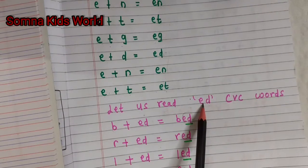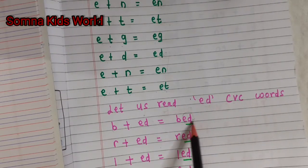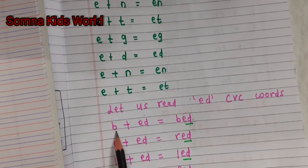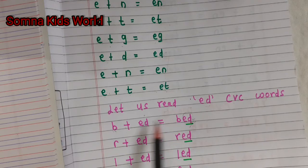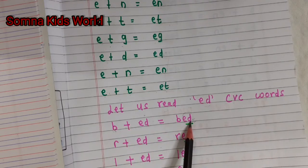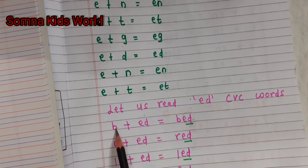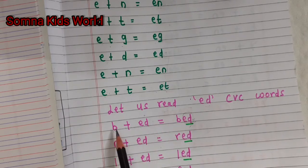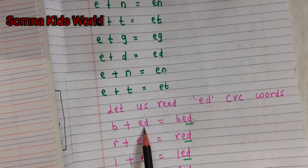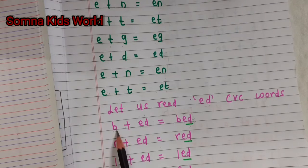Now let us see how to read the CVC words, or the three-letter words. You should know how to read these two-letter words first. The kids should read like this: b-e-d, bed. You should not read it one letter at a time like 'b, e, a, d'. You have to read it like this — the first letter is read with its phonic sound, like 'b' is 'bu', then you blend with the two-letter word at one time.